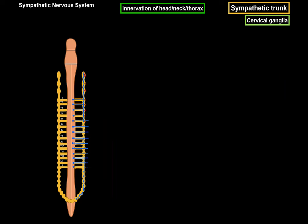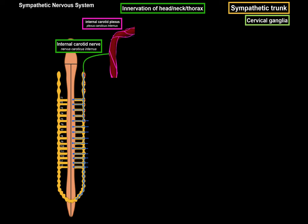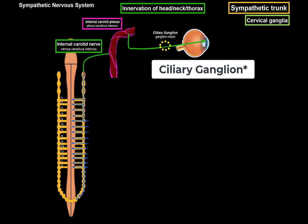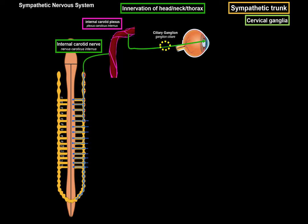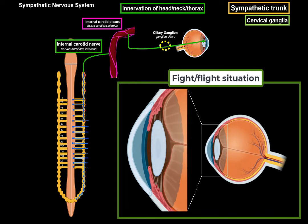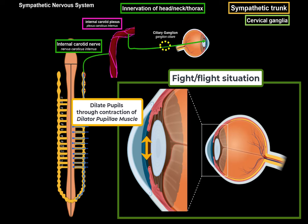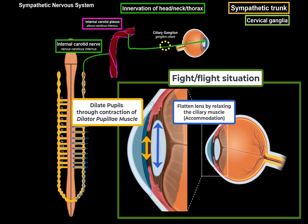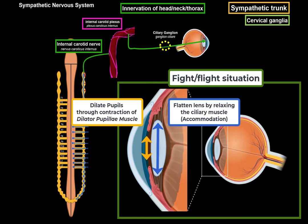The superior cervical ganglion gives off the postganglionic internal carotid nerve, which forms the internal carotid plexus around the internal carotid artery. Postganglionic fibers from here pass through the ciliary ganglion without synapsing, then travel toward the eye, releasing norepinephrine. In a fight or flight response, the pupils are going to dilate — norepinephrine acts on the dilator pupillae muscle, causing pupillary dilation to allow more light in and enable far vision. Norepinephrine also acts on the ciliary muscle to flatten the lens for far vision — this is called accommodation.